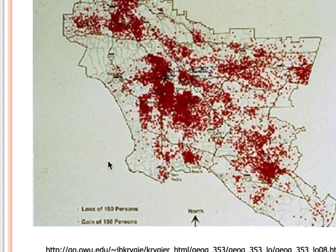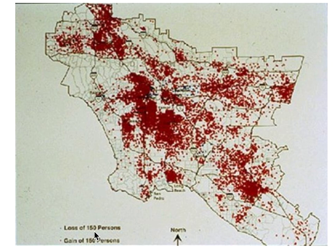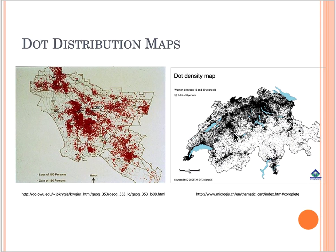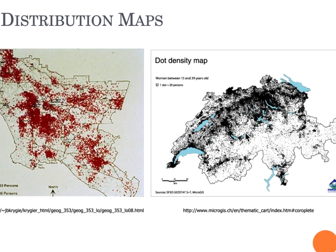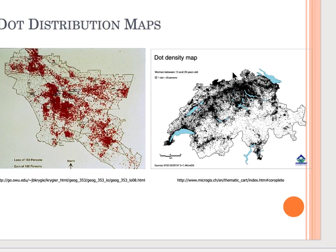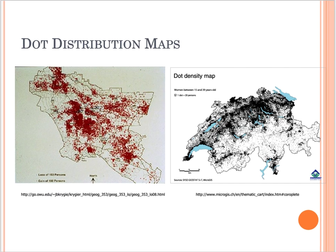Here we have a dot distribution map — zooming in, it shows losses of 153 persons and gains of 156 persons. Red dots represent population gain, while black dots represent population loss. This next example is a dot density map based on women between 15 and 39 years old, where one dot equals 20 persons, showing the distribution based on those different themes.